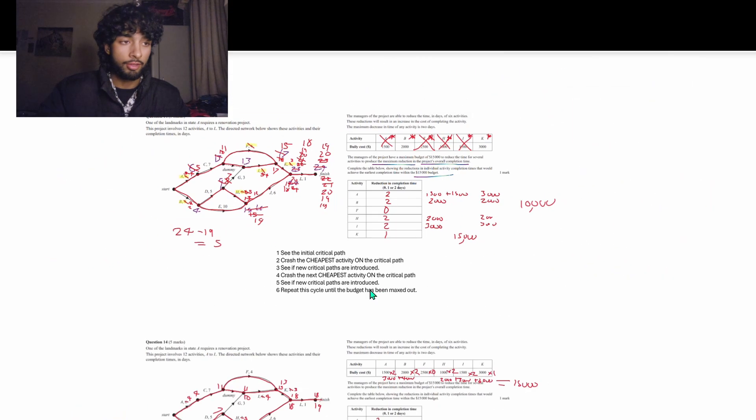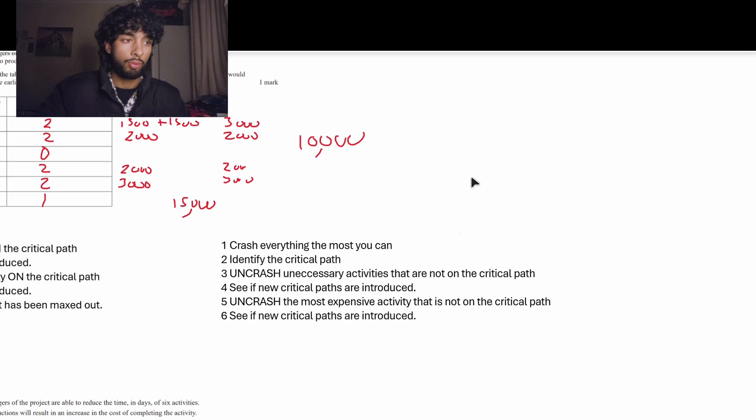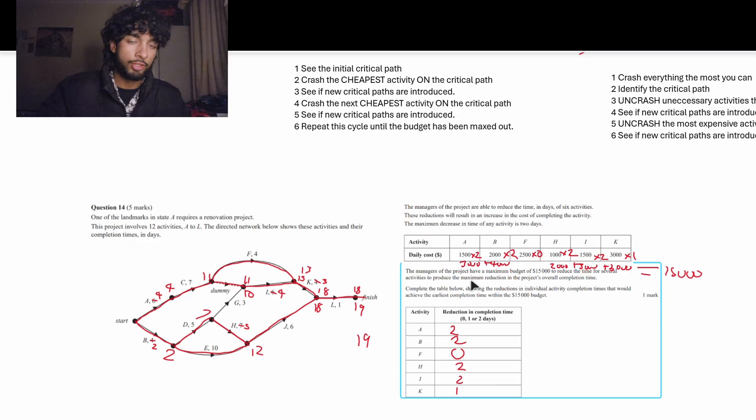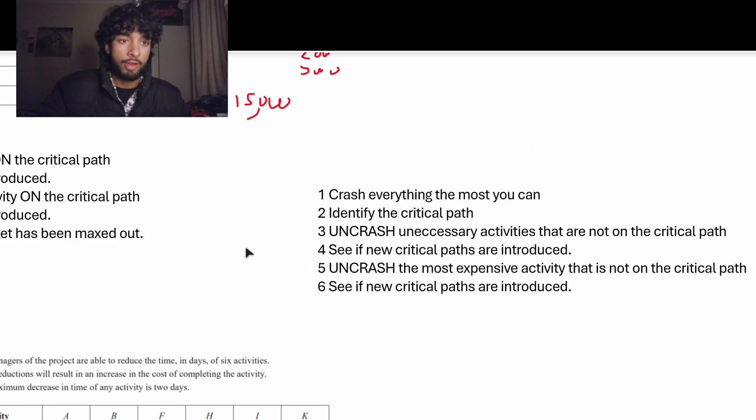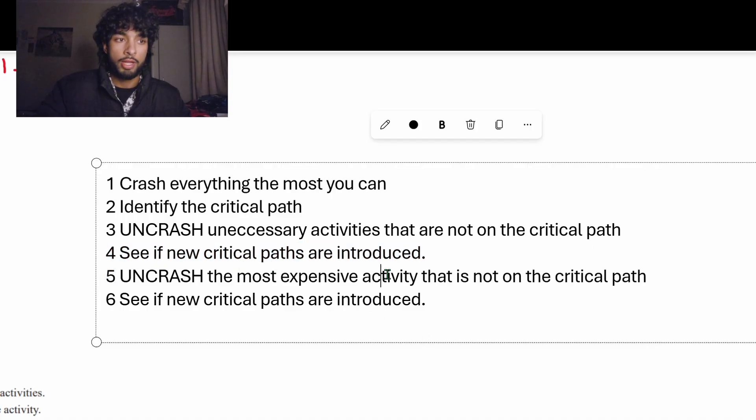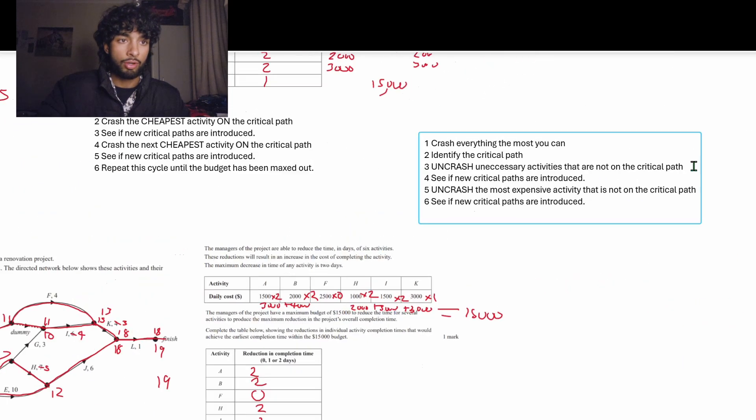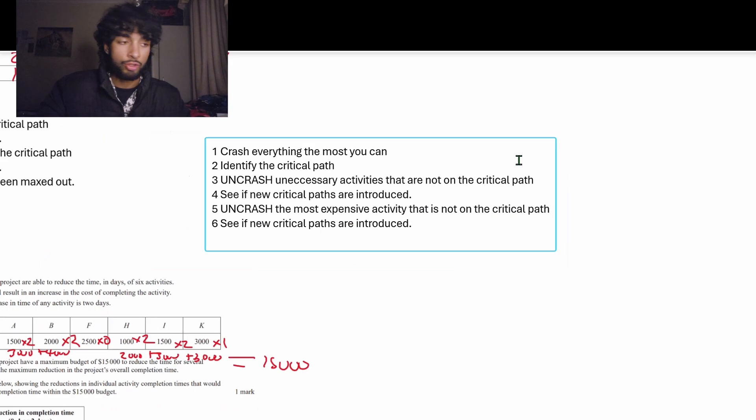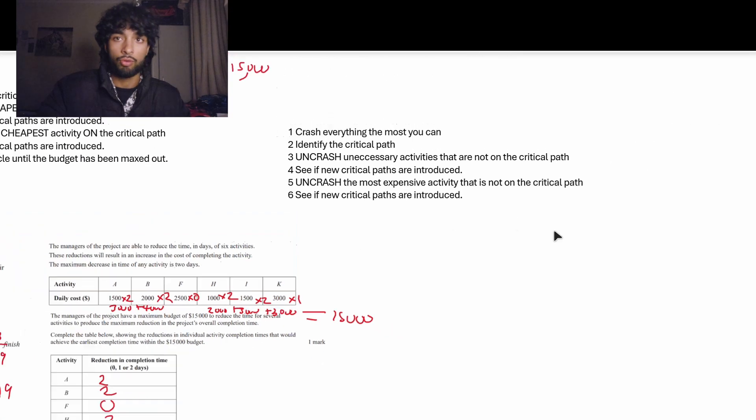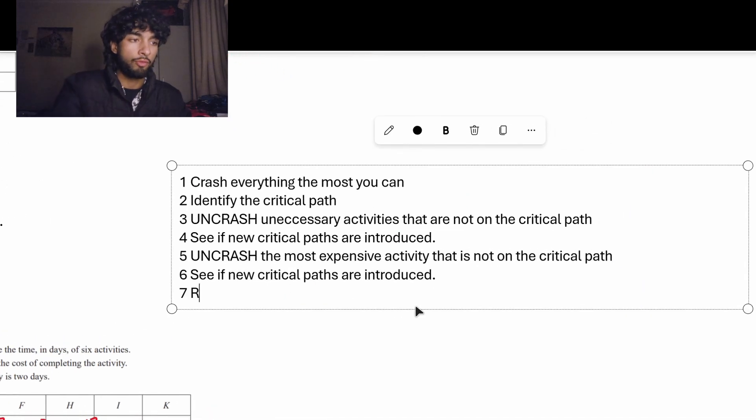In the second method, we did the opposite. We crashed everything the most you could. And then we identified the critical path. Then, instead of crashing things, we uncrashed unnecessary activities that are not on the critical path. And then we saw if new critical paths are introduced. Then we also uncrashed the most expensive activity. K was the most expensive activity and it wasn't on the critical path. Then we saw if new critical paths are introduced. And then you repeat this cycle until you fit inside the budget.